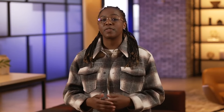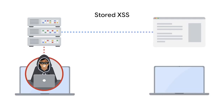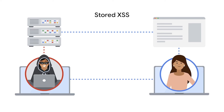In a stored XSS attack, the malicious script isn't hidden in a link that needs to be sent to the server. Instead, a stored XSS attack is an instance where the malicious script is injected directly on the server. Attackers target elements of a site served to the user — things like images and buttons that load when the site is visited. Infected elements activate the malicious code when a user simply visits the site. Stored XSS attacks can be damaging because the user has no way of knowing the site is infected beforehand.